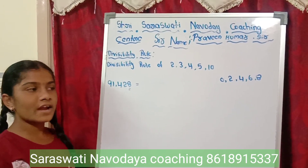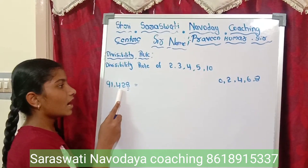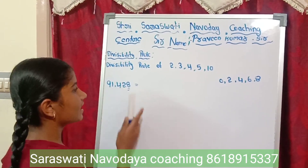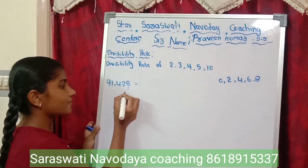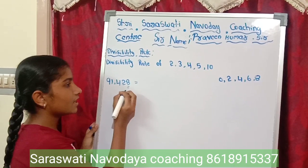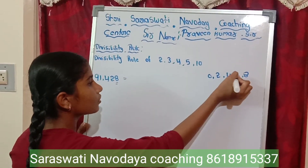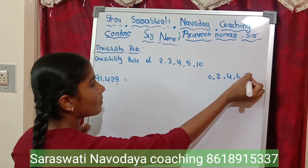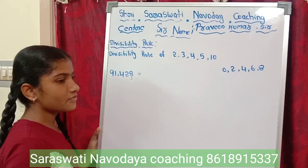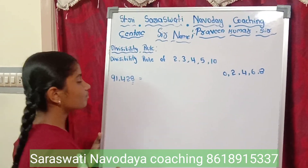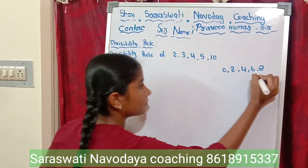For divisibility by 2, the unit place digit must be 0, 2, 4, 6, or 8. In the number 91,428, the unit place digit is 8. Since 8 is in the list, the number is completely divisible by 2.